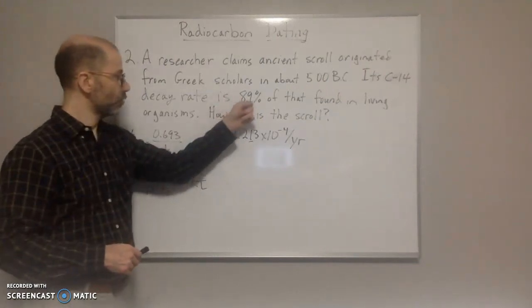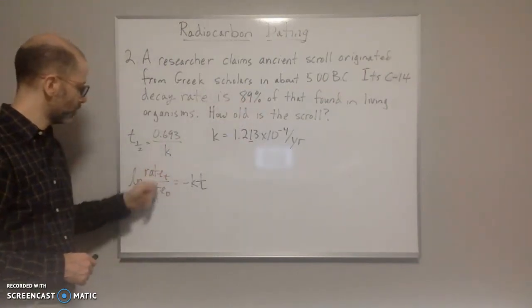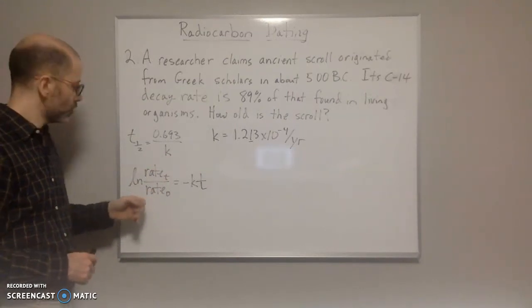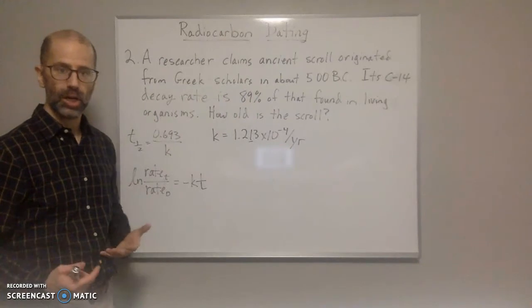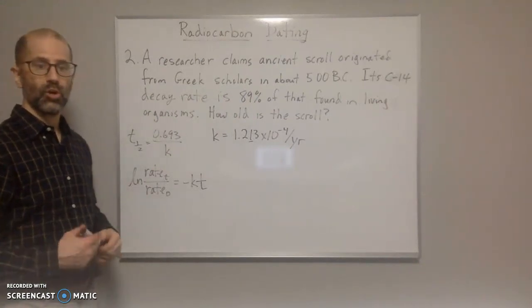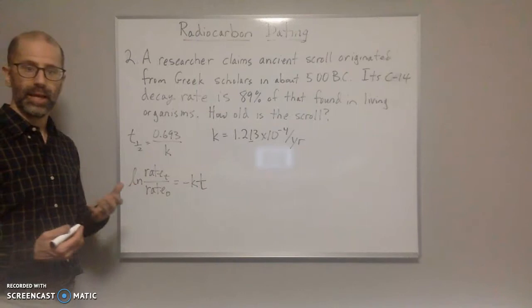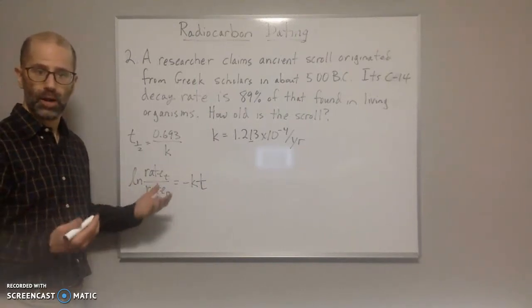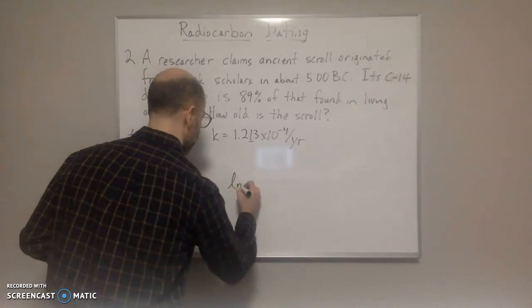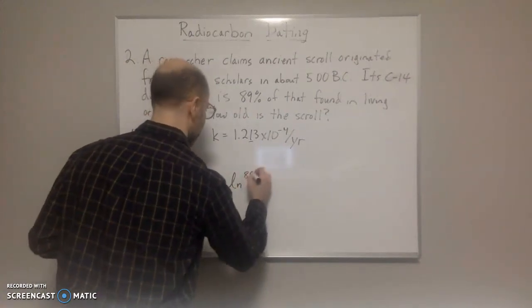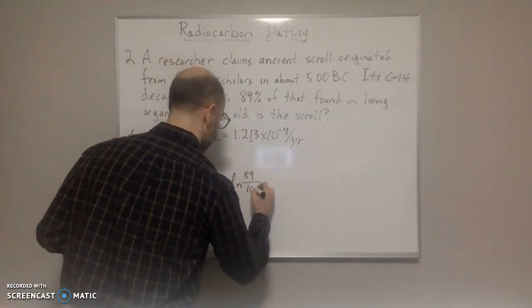Since we have a percentage, we can put that as a ratio. So 89% is 89 out of 100. So that would be the same as 0.89 out of 1. So we could just do ln of 89 out of 100.